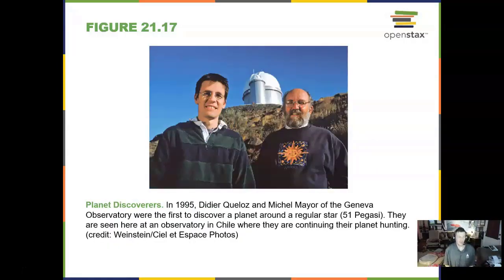Now this is very timely here in 2019. As I'm recording this, Planet Discoverers 1995, David Achilles and Michael Mayer at the Geneva Observatory. They were the first to discover a planet around a regular star, 51 Pegasi. And it just so happens that these guys won the Nobel Prize along with one other fellow in 2019 for that discovery.